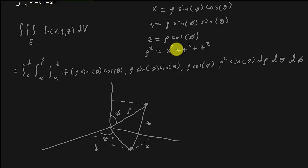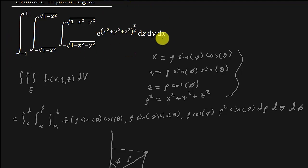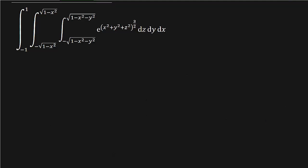That's basically what we're going to use. You might want to pause the video and jot that down because I'm fixing to erase it so I can have some room. Let me erase this and then we'll work the problem. We're going to convert this from rectangular to spherical coordinates.